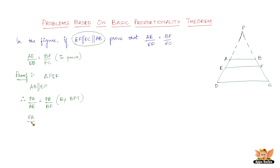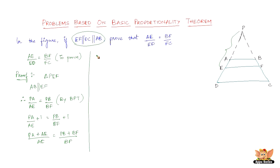Next, we add 1 to both sides of the equation. Adding 1 to PA by AE and PB by BF gives us PA plus AE by AE equals PB plus BF by BF. This simplifies to PE by AE equals PF by BF. Let us consider this as equation 1.